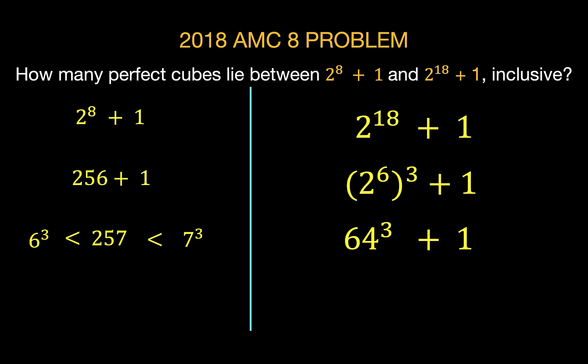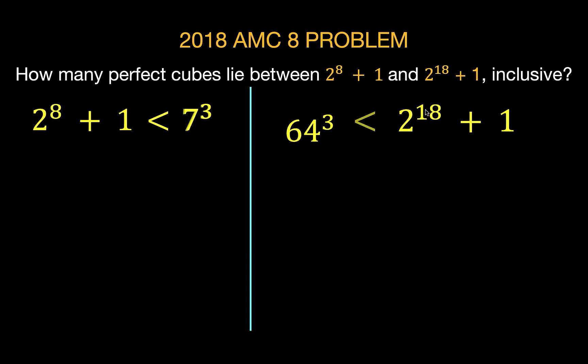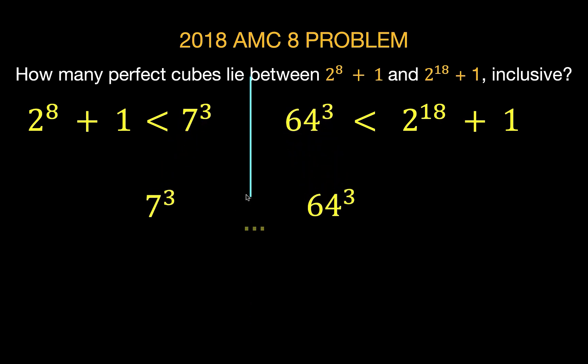Now let's go back to our previous result. Let's concentrate on this inequality. So 257, which is equal to 2 to the 8 plus 1, that is less than 7 to the 3rd. And then in here, 2 to the 18 plus 1 is equal to 64 cube plus 1. If we remove this plus 1, then 64 cube must be a little lower than 2 to the 18 plus 1. But if you take 65 to the 3rd, that is already greater than 2 to the 18 plus 1. So these are exactly the numbers that we are interested in. These are perfect cubes that lie between 2 to the 8 plus 1 and 2 to the 18 plus 1.